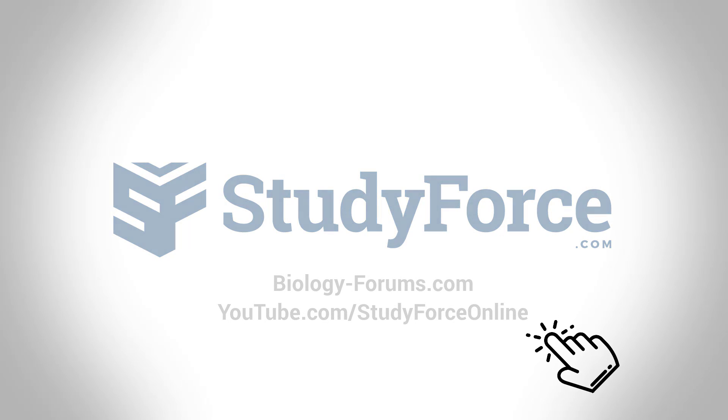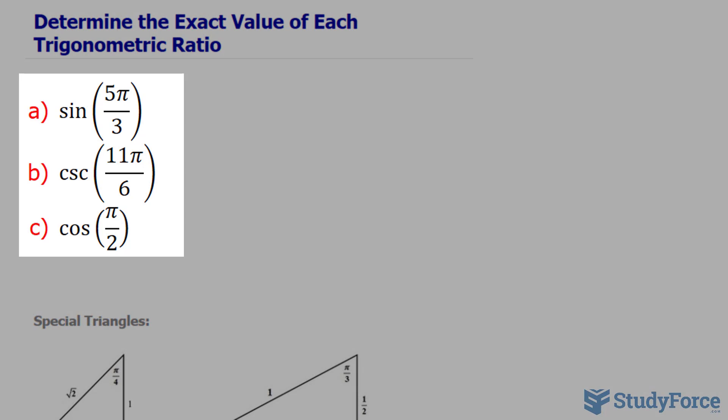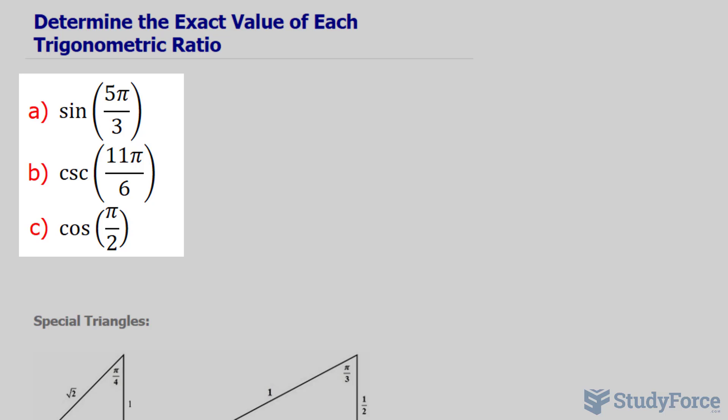In this lesson, I'll show you how to determine the exact value of each trigonometric ratio. Questions like these are typically asked in a grade 11 or 12 setting when learning about functions in trigonometry. And in order to be successful with them, you need to know about two things: special triangles and the unit circle.